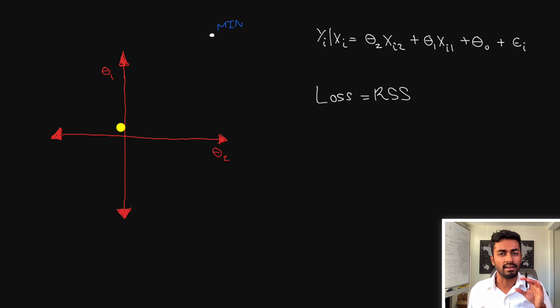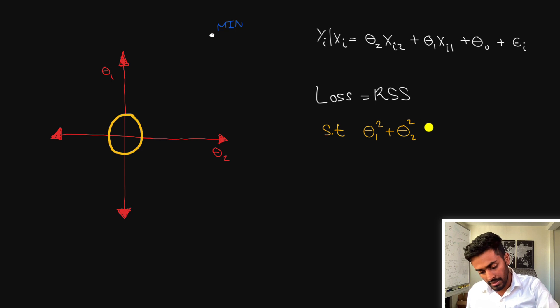Let's now add a little constraint where we want the theta 1 value and theta 2 value to be very small. Let's say that we want it to be in this region here that's defined by this circle. In math notation this is equivalent to minimizing the RSS such that your theta 1 squared plus theta 2 squared is going to be less than or equal to some value s.